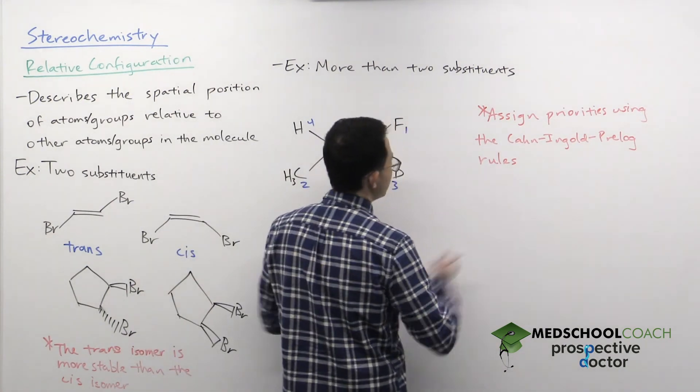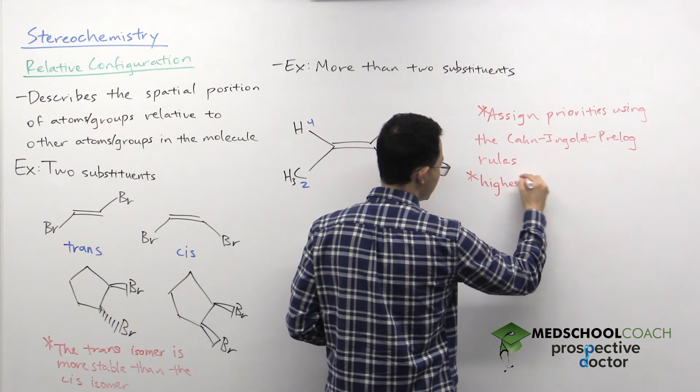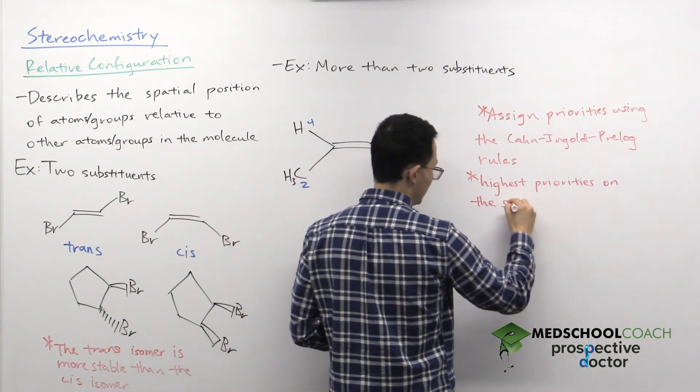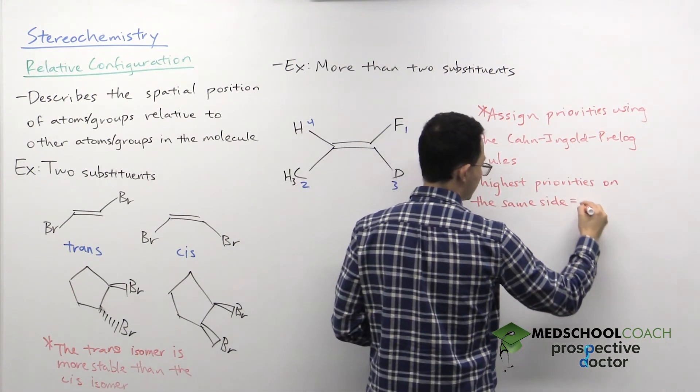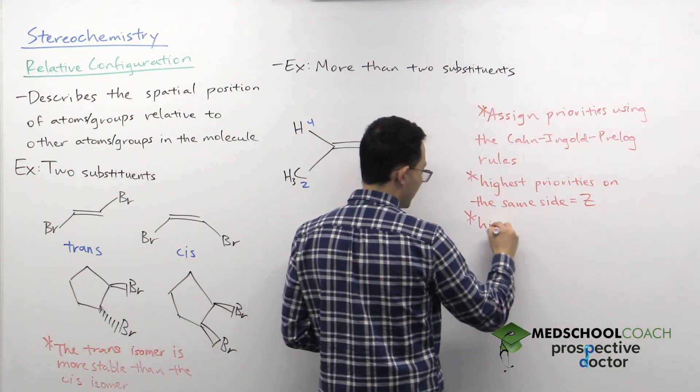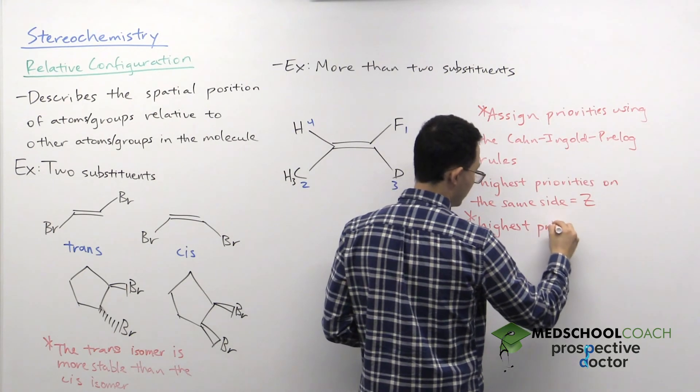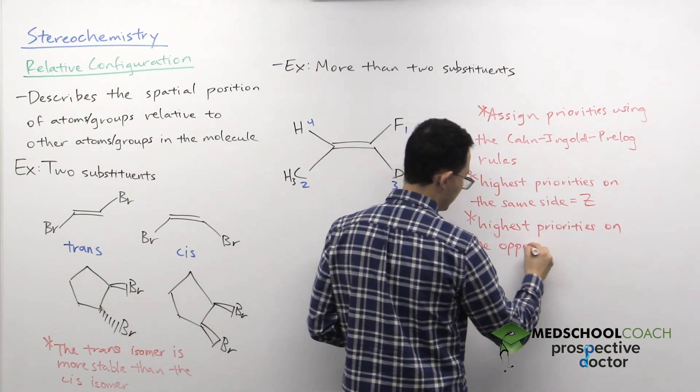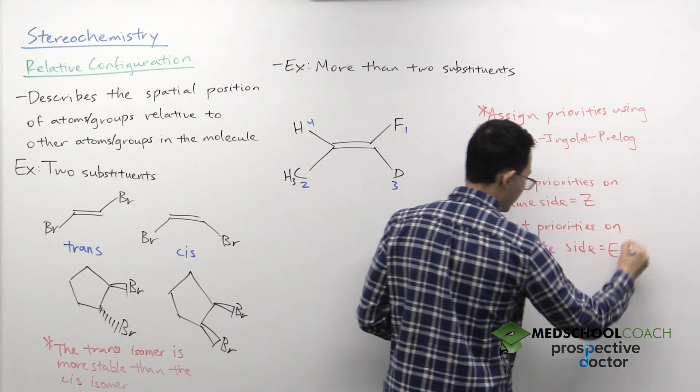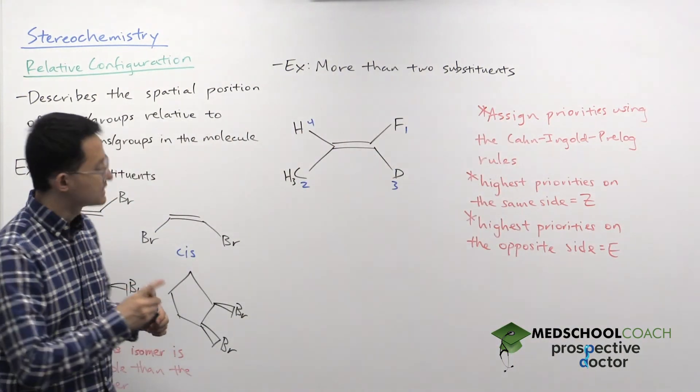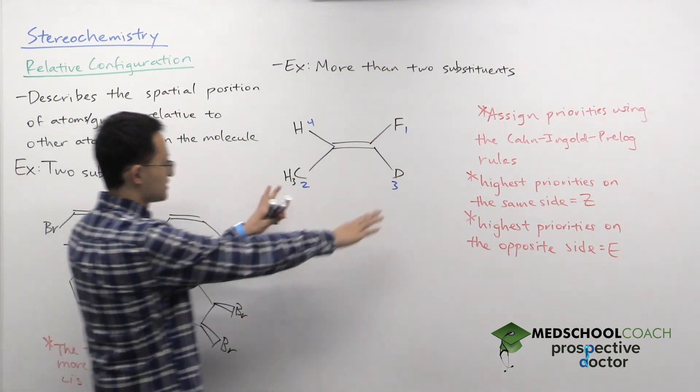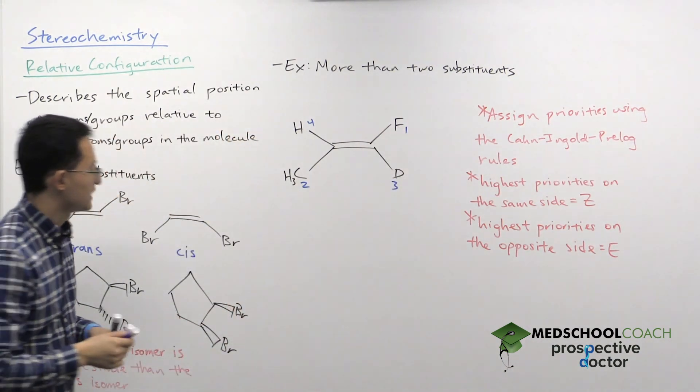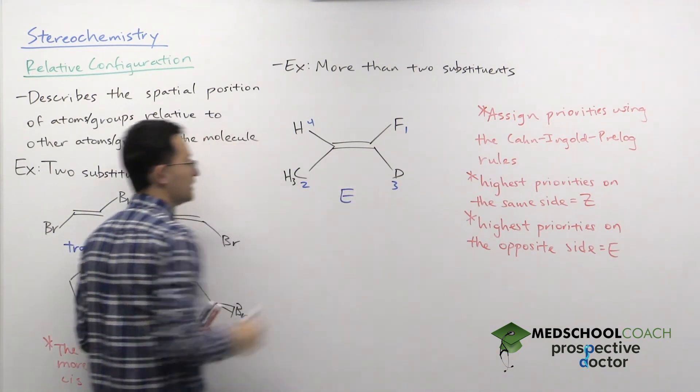So what you can say is if your highest priorities are on the same side, then that is Z. However, if your highest priorities are on the opposite side, then that will be E. And we can see here, in terms of our highest priorities, on both sides of the double bond, which is the two and the one, you can see that they are on opposite sides. So in this case, this molecule is E, like trans.